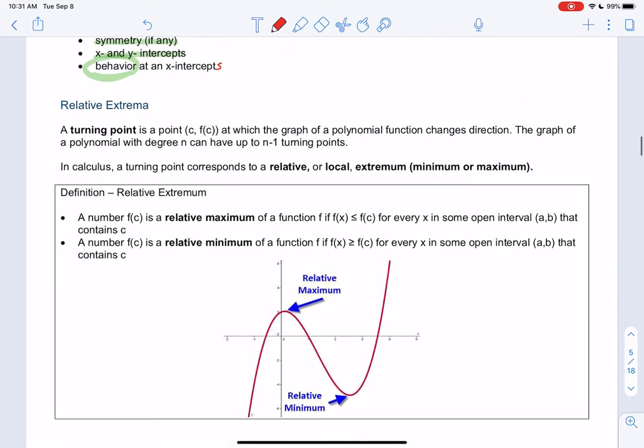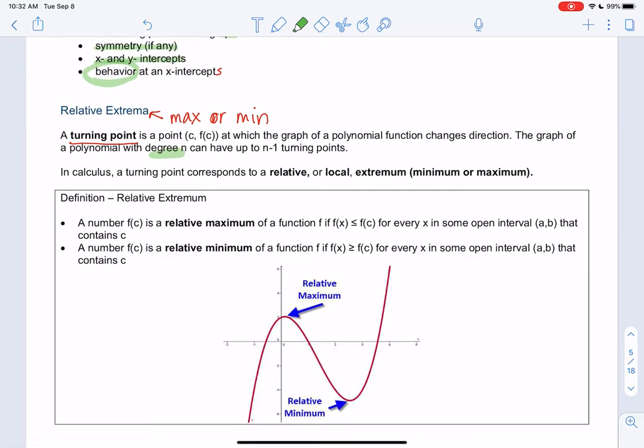A little bit of vocab: relative extrema. Extrema is probably a new word. It's just an easy way to say max or min, grouping them together. That's when we have a turning point in the graph - the point (c, f(c)) is a turning point when the function changes direction. If we have degree n, we can have up to n minus 1 turning points. So x squared can have 1 turning point. But if I have x to the 5th, we can have up to 4 turning points. We don't quite know how to find them yet, but we know they exist.